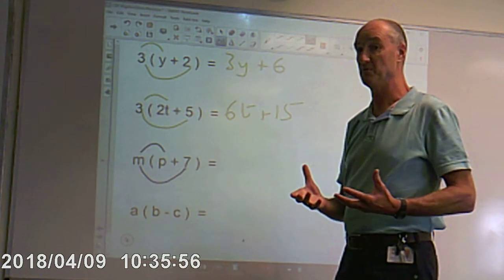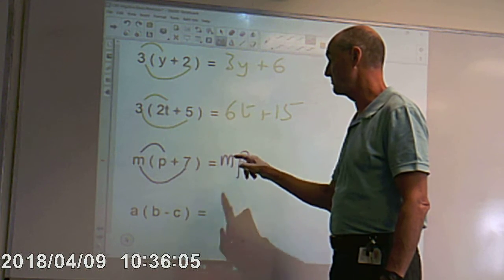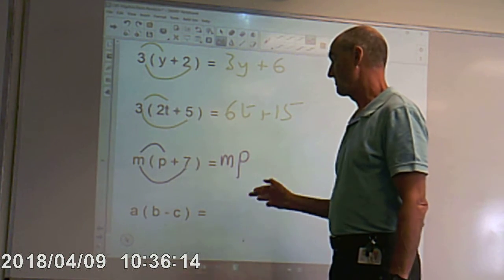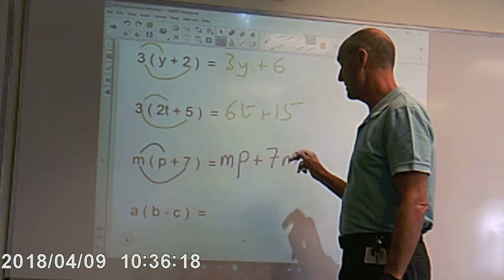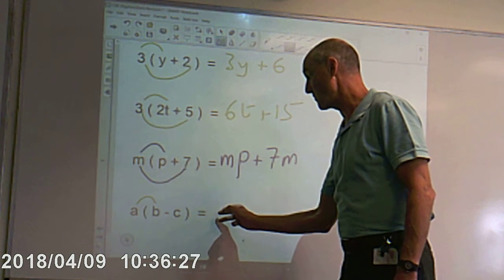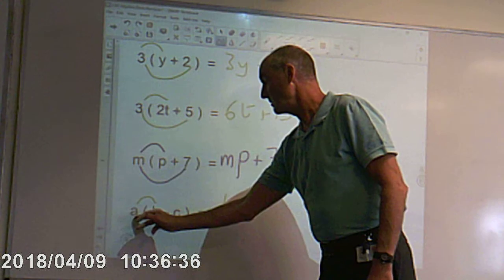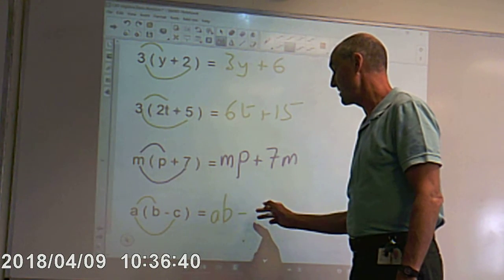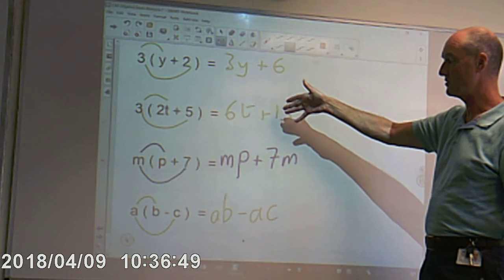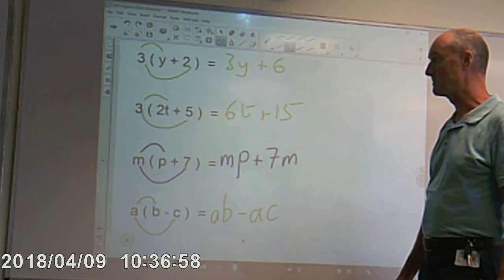m times p — different variables, you can't actually combine them, so that's written as mp. What about m times 7? Multiply them together and it gives you 7m. a times b — different types of variable, can't combine them, so just write it as ab. a written next to b means a times b. a multiplied by negative c gives minus ac. Those are important examples going through from very basic to slightly more difficult, introducing variables multiplied by each other. That is multiplying out brackets.